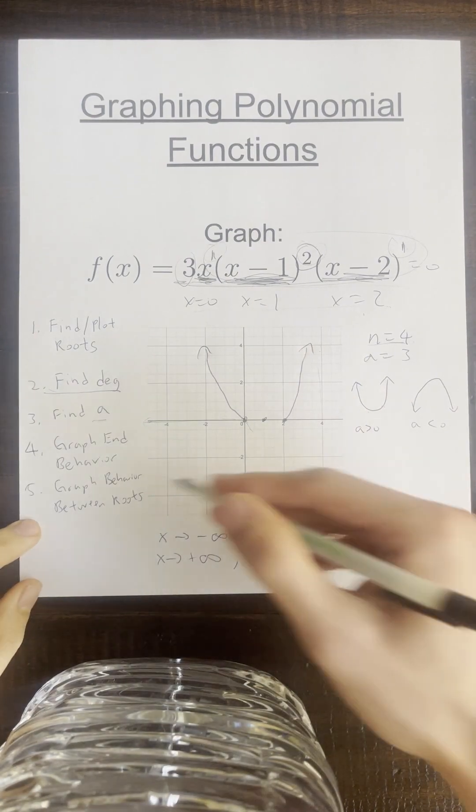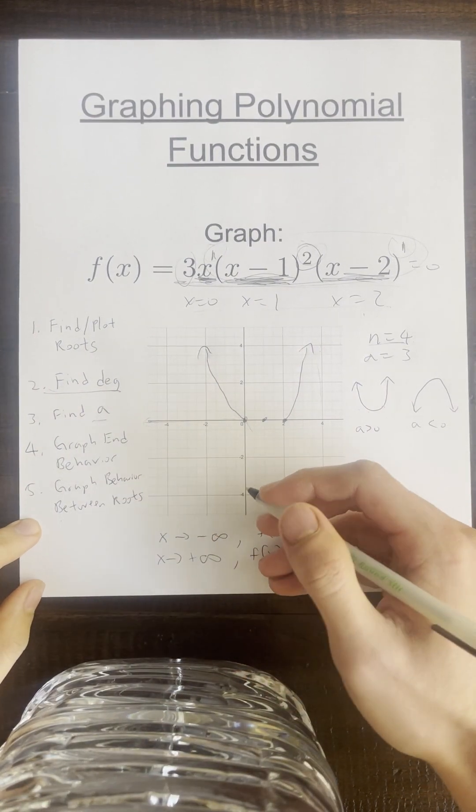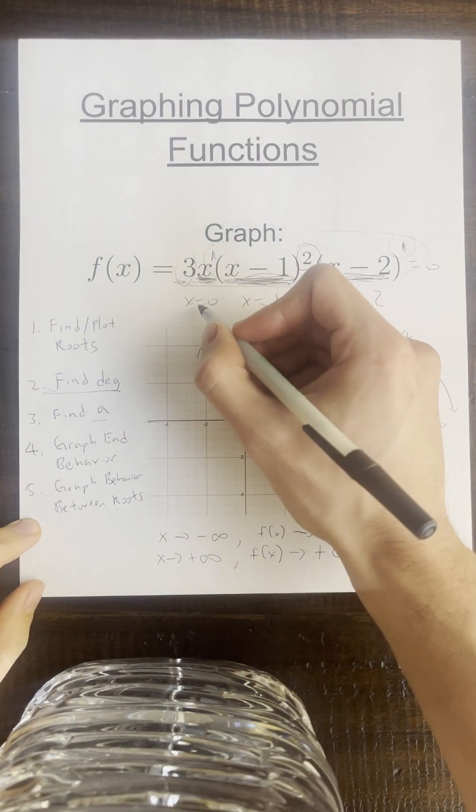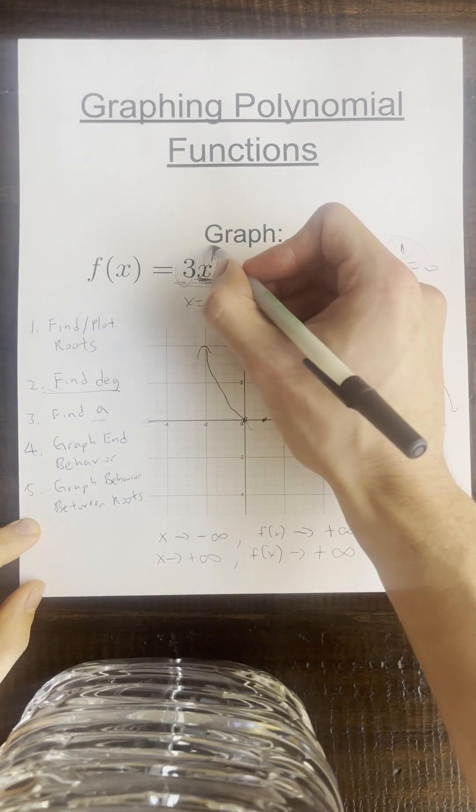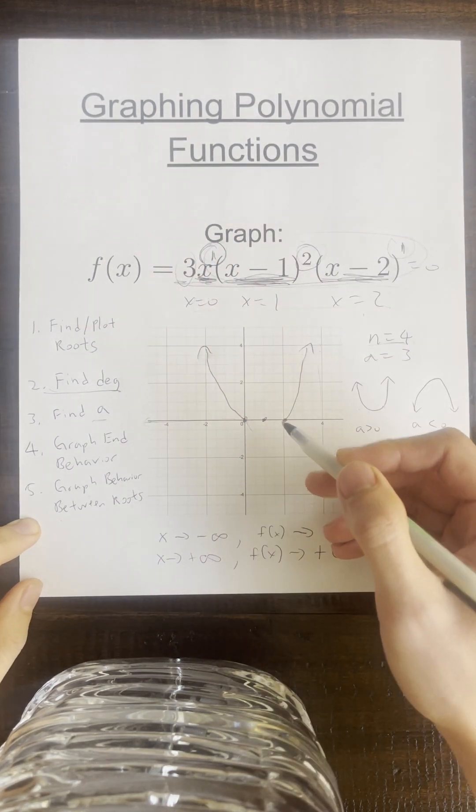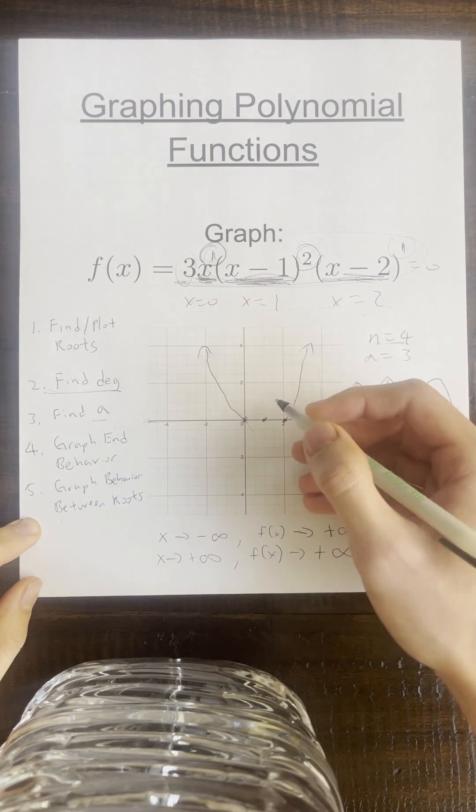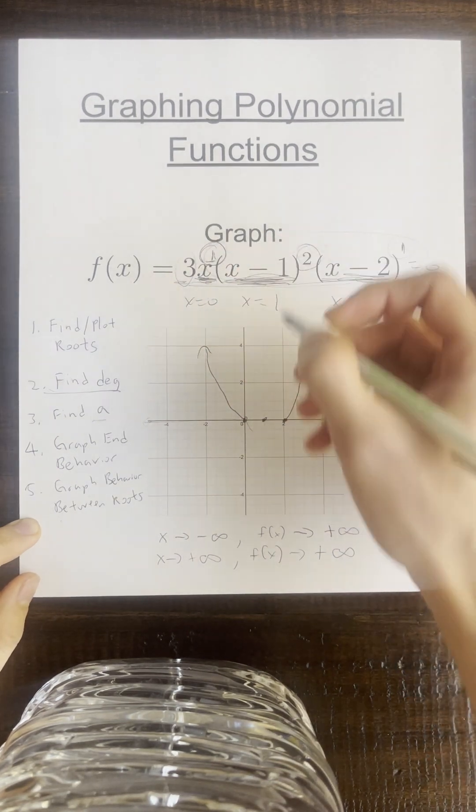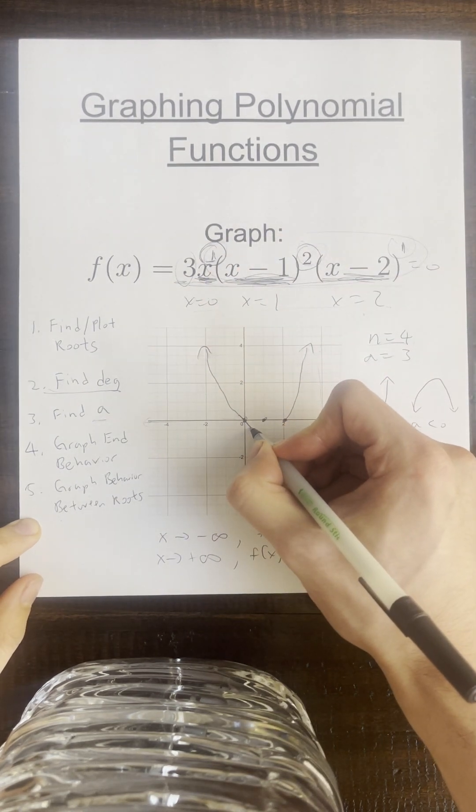Our last step is to graph the behavior between the roots. So we'll start here at x equals zero. And x equals zero has an odd multiplicity because this one here is an odd number. And when we have an odd multiplicity, we're just going to pass through the root like this.